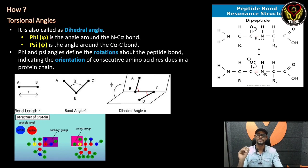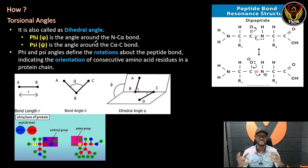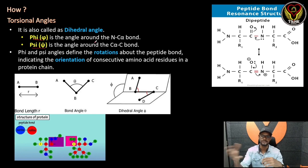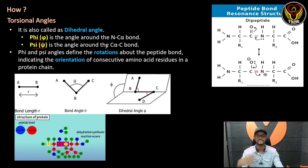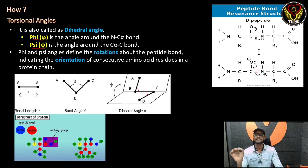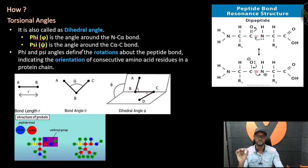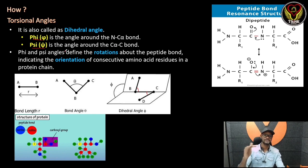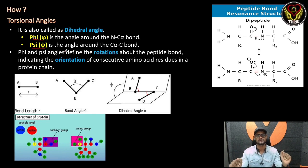There are two angles — the phi angle and another angle. The phi angle is a dihedral angle. If you look at the phi angle, it is a very important concept.